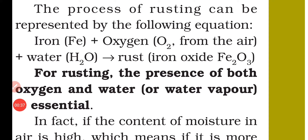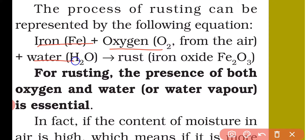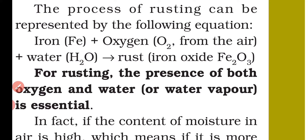We can understand the process of rusting through this equation. Whenever iron (Fe) reacts with oxygen present in the atmosphere, as well as water present in the form of moisture in the atmosphere, when these three things combine they form iron oxide. This iron oxide is the rust.